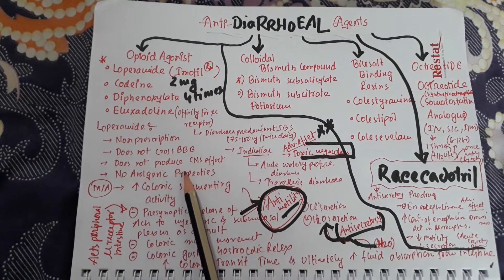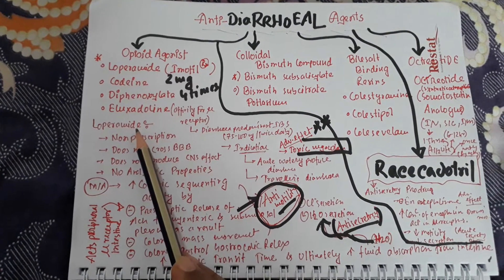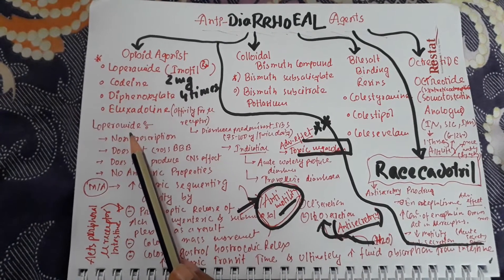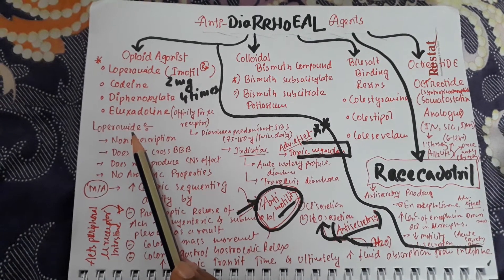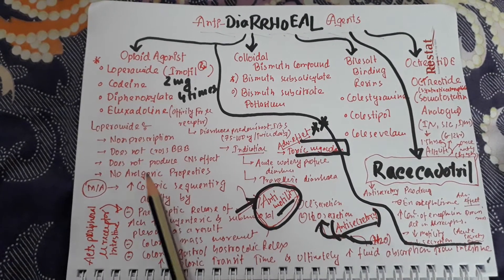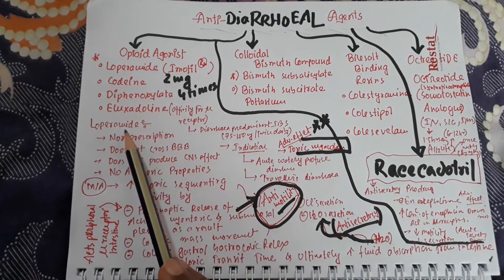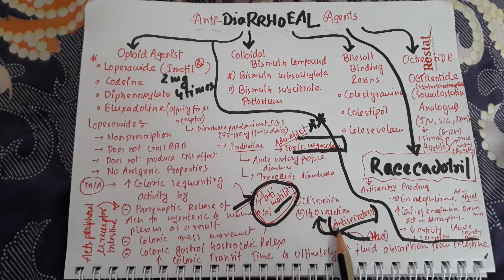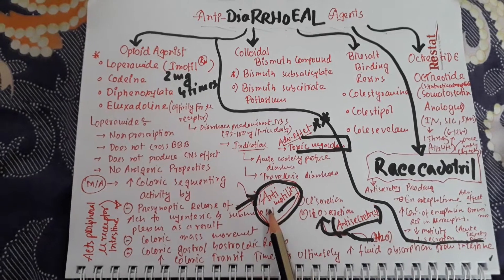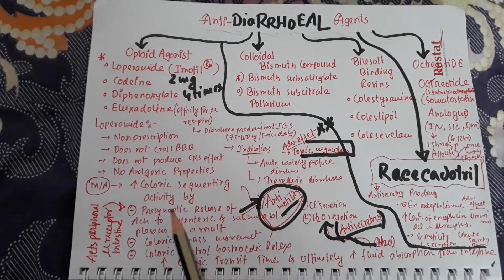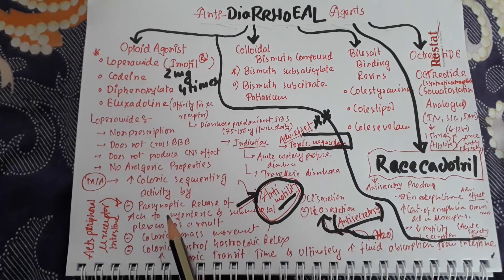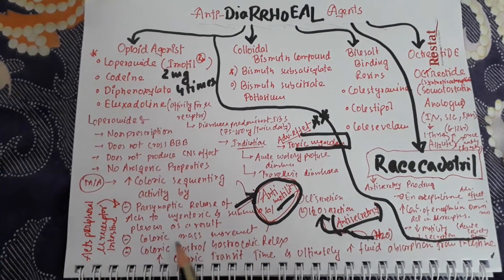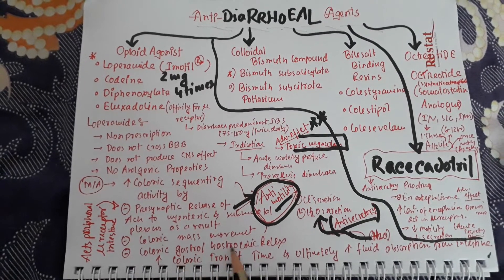Although loperamide has no analgesic properties, it is an opioid agonist and causes constipation. This constipating effect of loperamide is exploited in treating diarrhea. There are two mechanisms of action used to control diarrhea: anti-motility action and anti-secretory action. The anti-motility action develops because loperamide increases colonic segmenting activity by inhibiting the presynaptic release of acetylcholine in the myenteric and submucosal plexus, resulting in no colonic mass movement and no gastrocolic reflex.